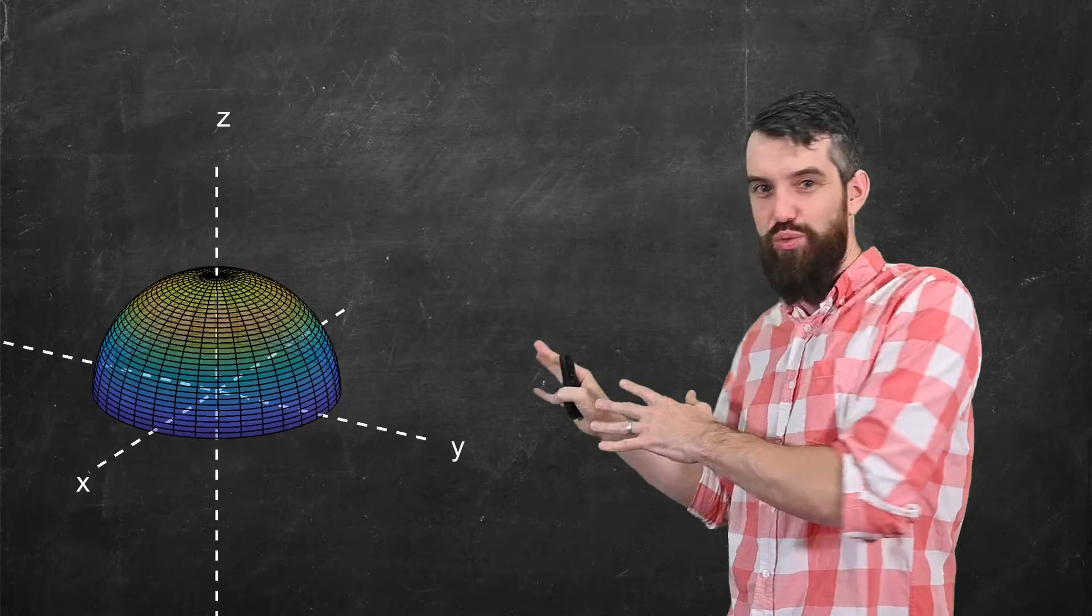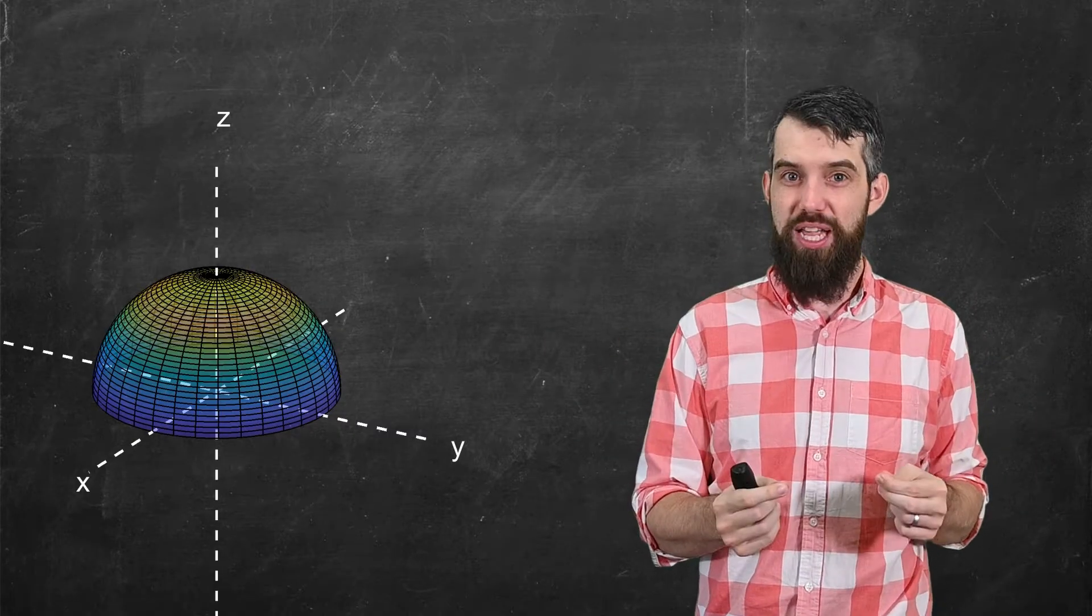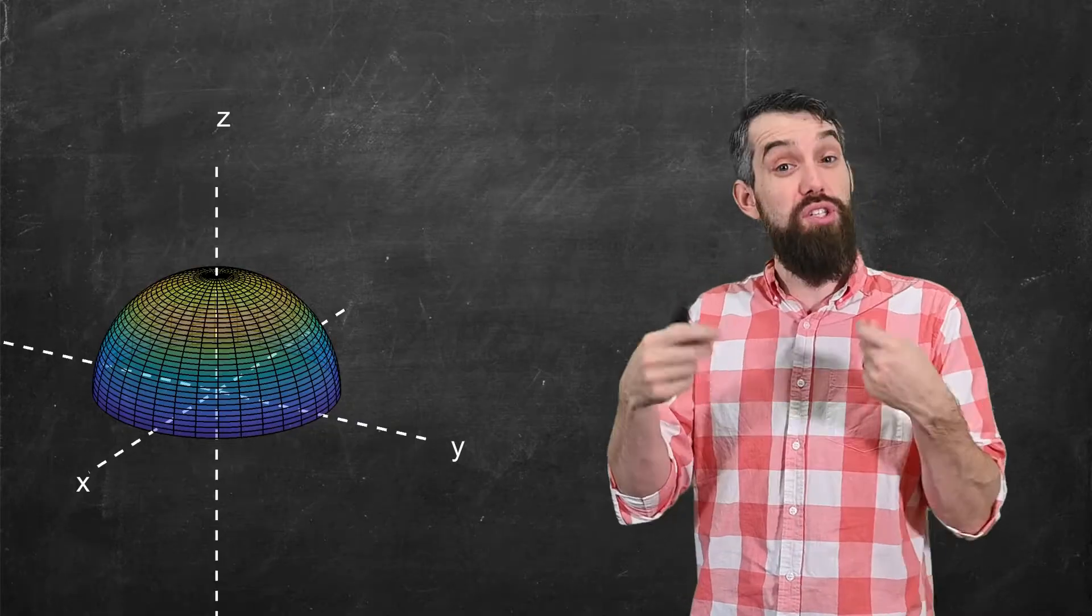Imagine you have a surface like this one. This is the top half of a sphere. I want to define a concept called orientation of a surface.